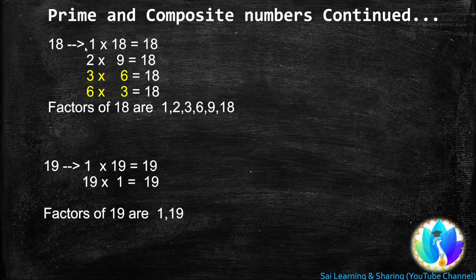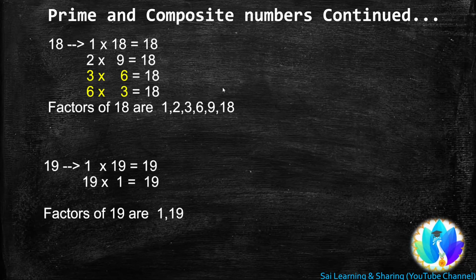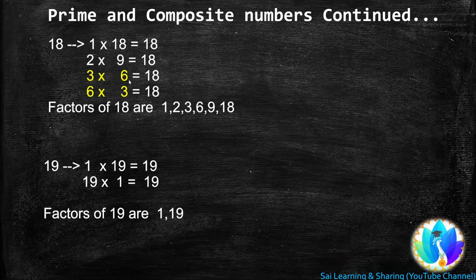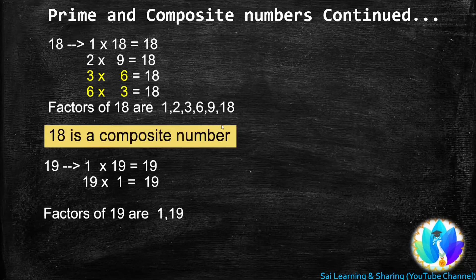Next, 18. 1 is a factor of every number, so 1 × 18 = 18. 18 is a multiple of 2: 2 × 9 = 18. 18 is a multiple of 3: 3 × 6 = 18. 18 is not a multiple of 4 or 5. At last, 18 is a multiple of 6: 6 × 3 = 18. We stop here because both 3 and 6 have occurred earlier. So the factors of 18 are 1, 2, 3, 6, 9, and 18. Since 18 has more than two factors, 18 is a composite number.